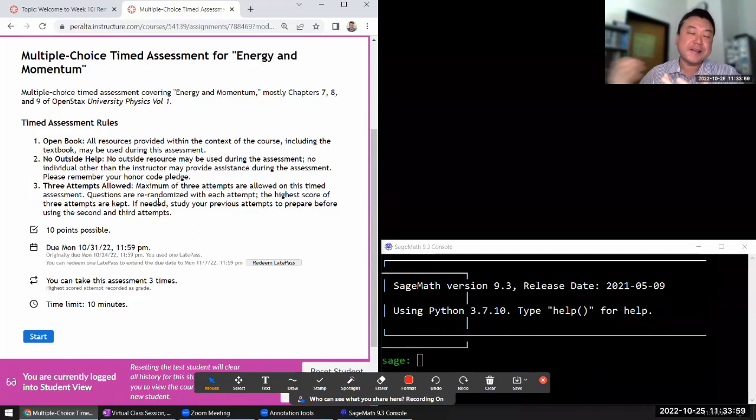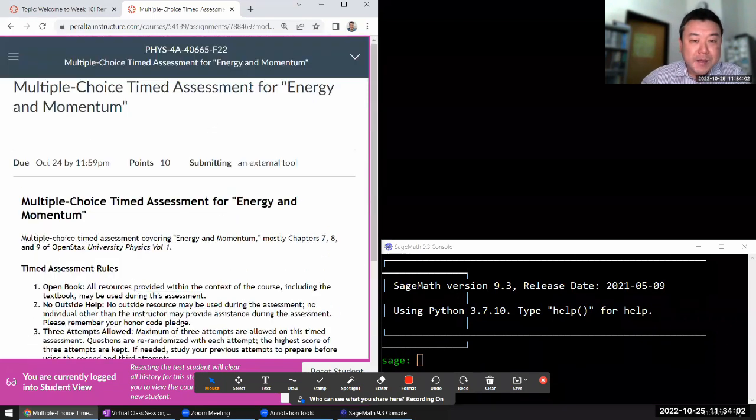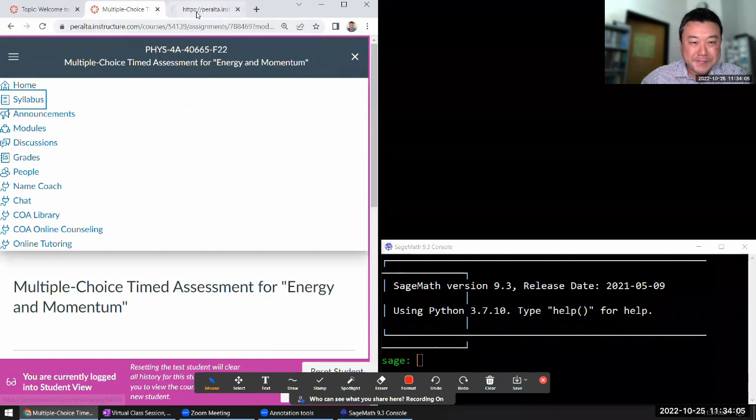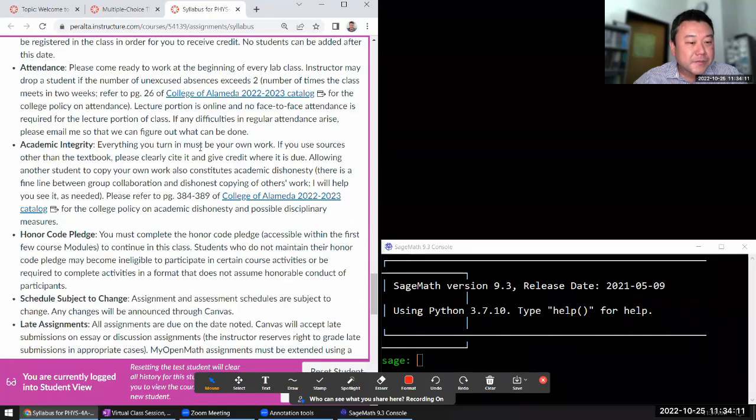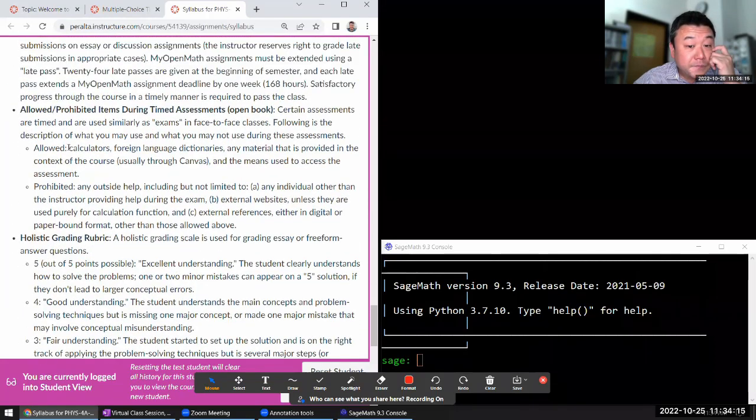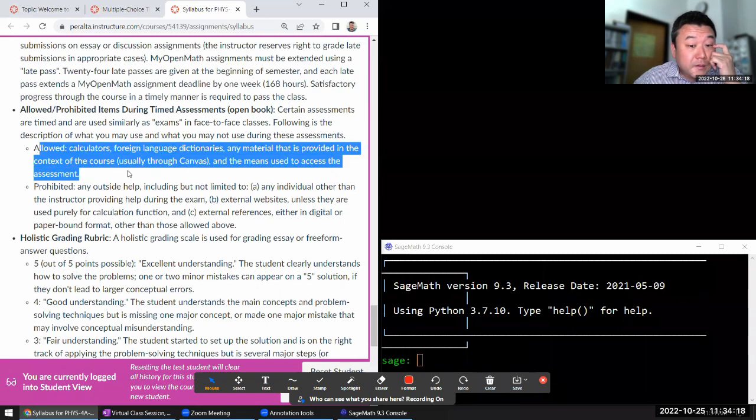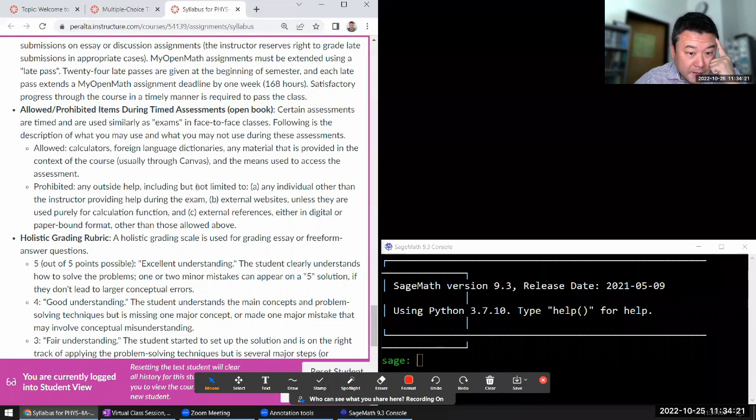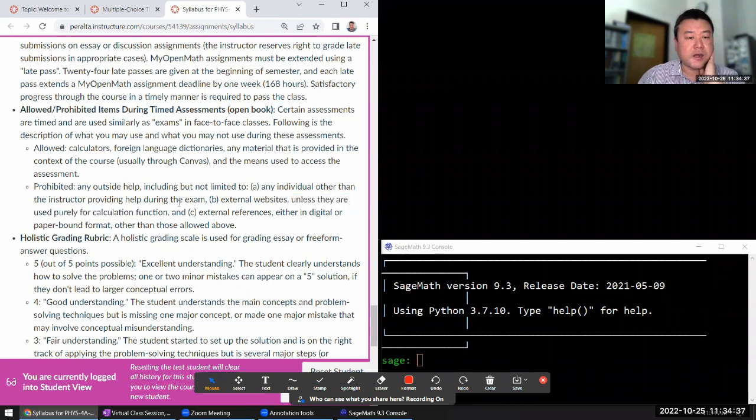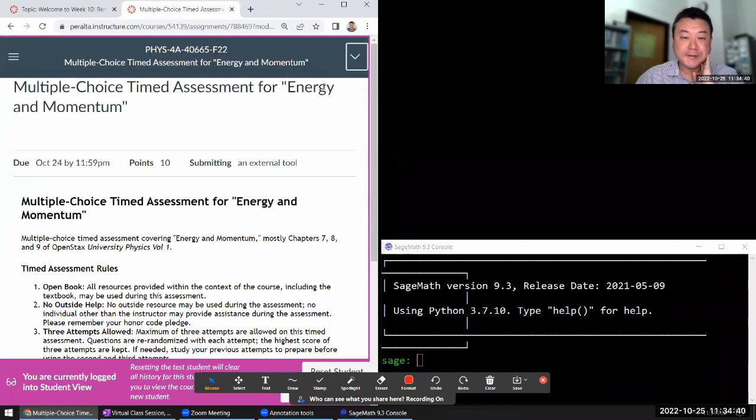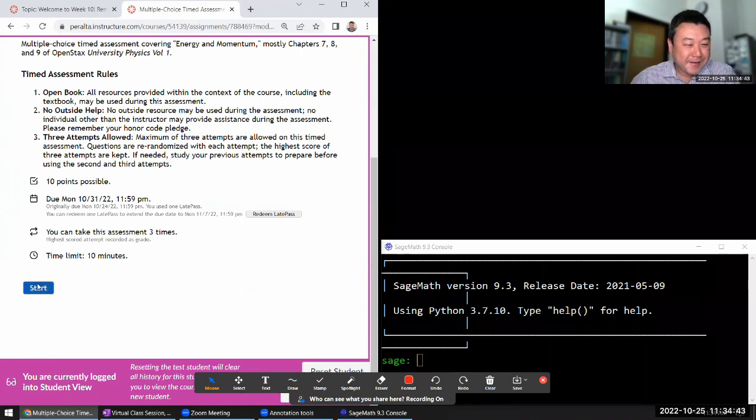Well, I will just tell you what the policy is. Calculators are allowed. You know what, it might be in the syllabus. This last place I check and we'll just do this one so that I don't have to. Okay, so I think here it is. So allowed calculators and under prohibited it says external websites unless they are used purely for calculation function. So Wolfram Alpha using it purely for calculator or even Google using it purely as calculator is allowed. That's always been the policy. It's in the syllabus. All right, let me start.